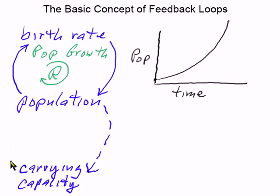As carrying capacity goes down, so does the population, which is a direct relationship represented by a solid arrow. The name of this loop is overshoot correction.